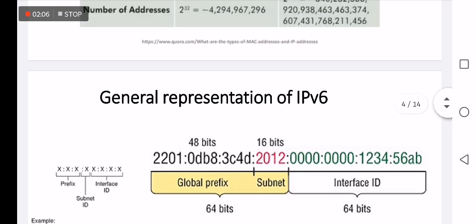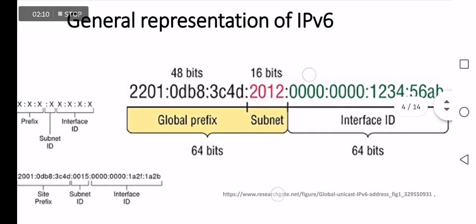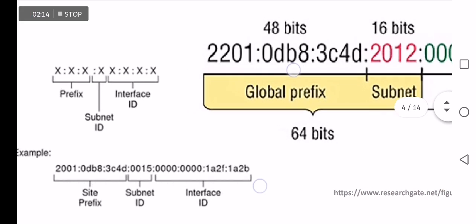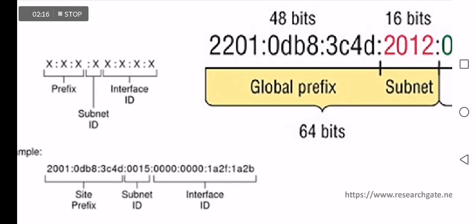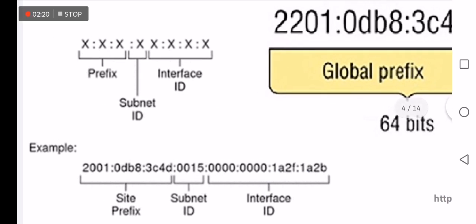The general representation of v6 can be shown here using x's, where each x represents 16 bits. The left side — specifically the three x's on the left — represents the prefix, followed by the subnet ID, followed by the interface ID.